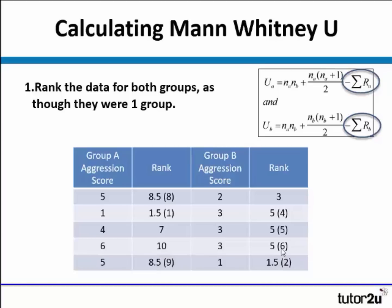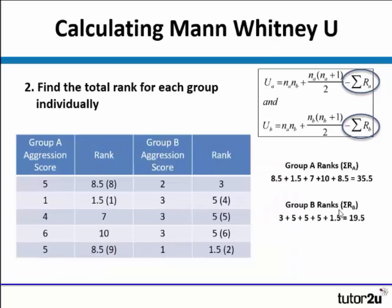So we've got ranks one through ten, but we've divided up the ranks where there are scores that are the same. The second part of Mann-Whitney U is to find the total rank of each group individually. Now we've ranked them as a whole group, we need to look at the ranks that group A got. The 8.5, add 1.5, add 7, add 10, add 8.5 — by my calculations, that gives us 35.5.